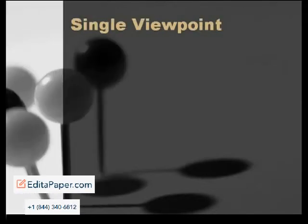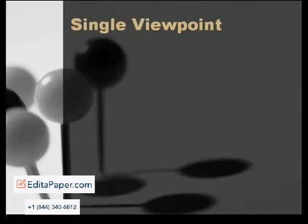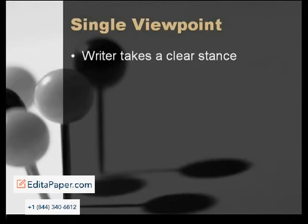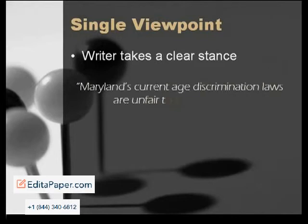In the single viewpoint paper, you, the writer, take a clear stance or position on the issue you've chosen. For example, consider this thesis: Maryland's current age discrimination laws are unfair to small businesses. Clearly, this writer has a definite point of view on the issue, and in this paper the writer will present arguments or reasons to prove the truth and validity of that belief.